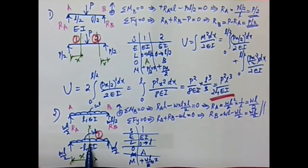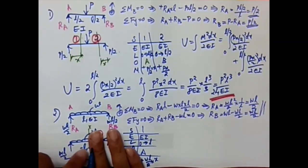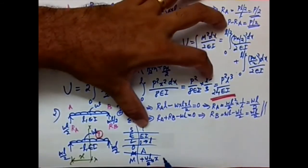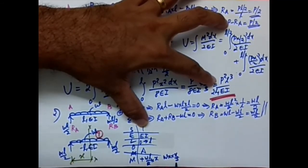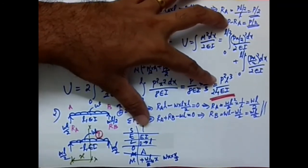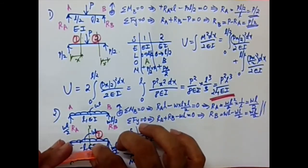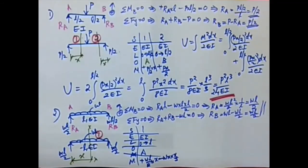Now considering villain two, the UDL W acting over length X: the total load is WX, and it acts at the centroid of that distributed portion, which is at X/2 from the section. So the moment contribution is WX times X/2 = WX²/2. This UDL creates a hogging moment at the section, so it is negative: −WX²/2.